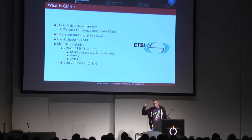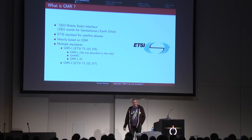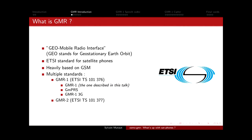What is GMR exactly? GMR stands for Geo Mobile Radio, and it's an ETSI standard for satellite phones. It's heavily inspired from GSM, and if you read the GMR specs there's plenty of references to the GSM spec. There are actually two standards named GMR - GMR1 and GMR2. They are not evolutions of one another; they are competing standards developed by distinct companies and both have been standardized through ETSI.